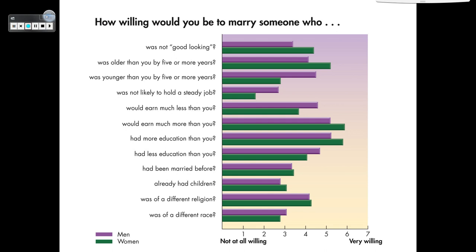We've done surveys asking participants how willing they would be to marry someone who had various traits. For example, more women were willing to marry someone they didn't find good-looking; more men were willing to marry someone younger by five or more years, while women were more willing to marry someone older by five or more years. Men were more willing to marry someone with less education and someone of a different race, while women were slightly more willing to marry someone of a different religion.